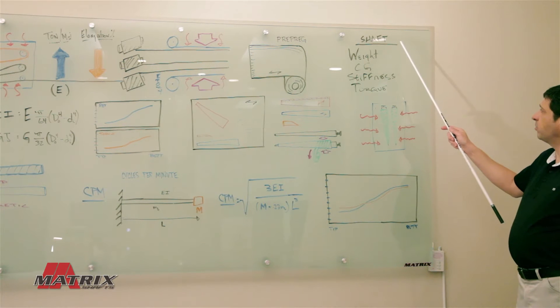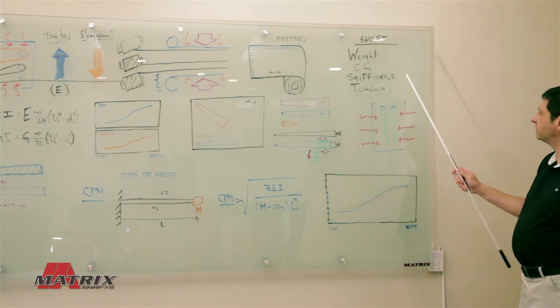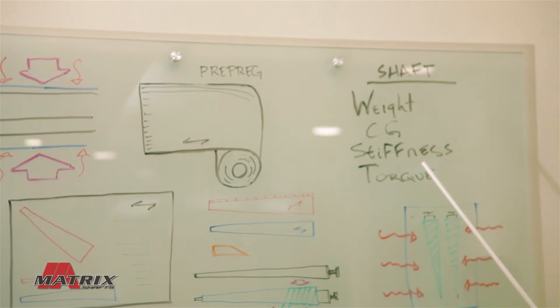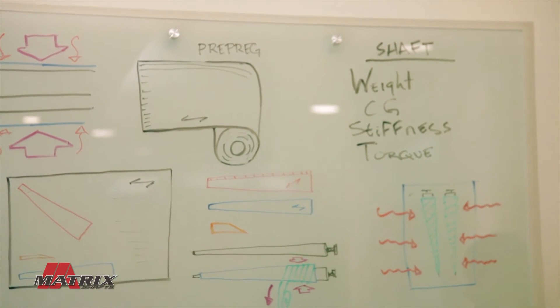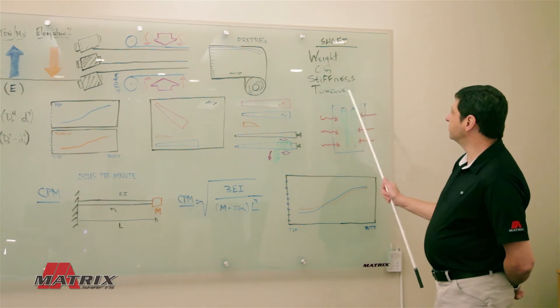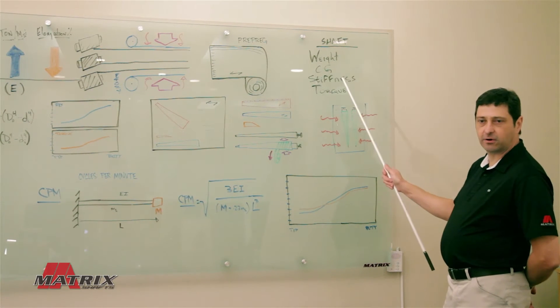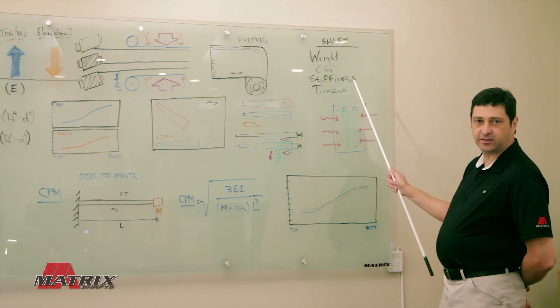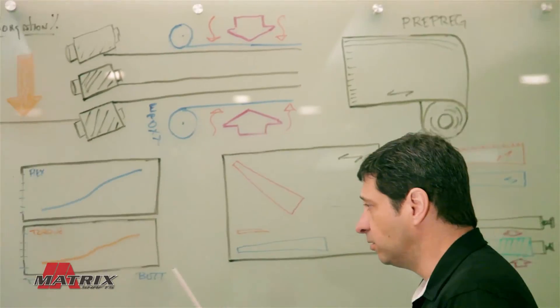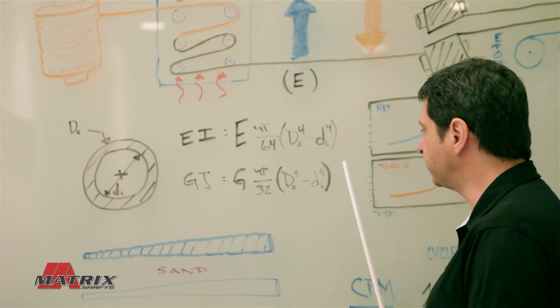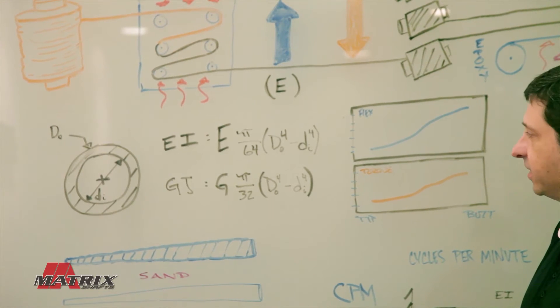The important things when designing a shaft include weight, your center of gravity, the stiffness profile of the shaft, and torque. When we're designing a new shaft, we have targets for all these based on the market, the player, and the performance we want out of the shaft. To calculate those things, you can do it with just a few equations.